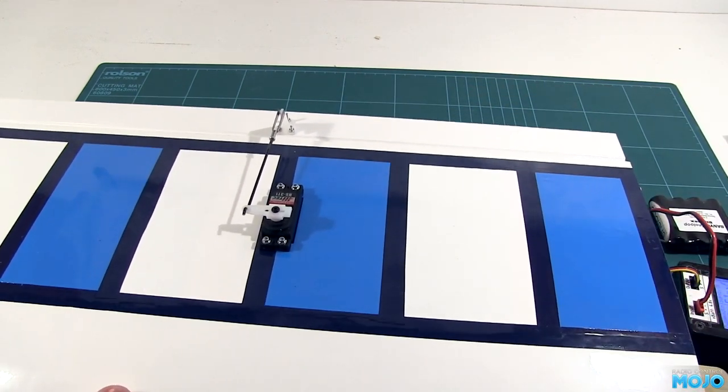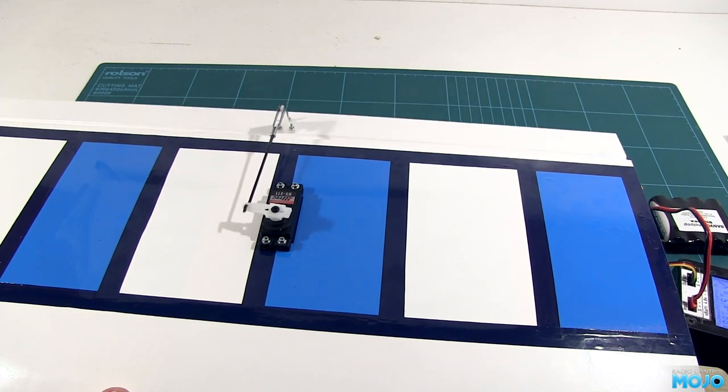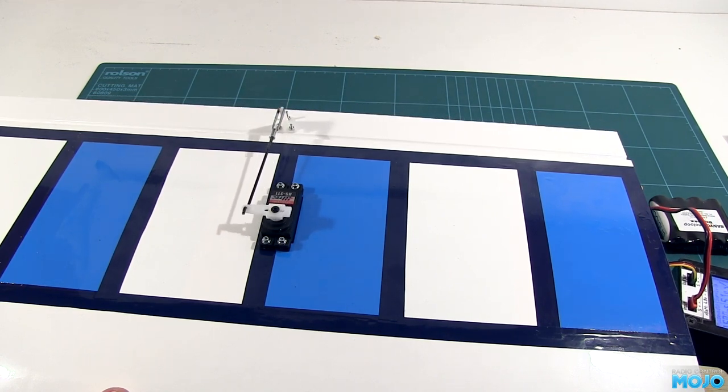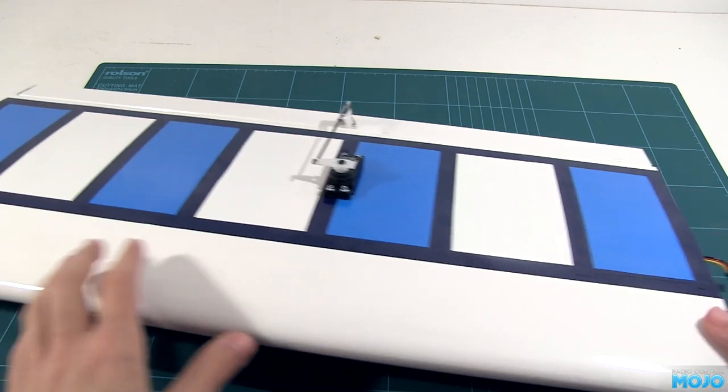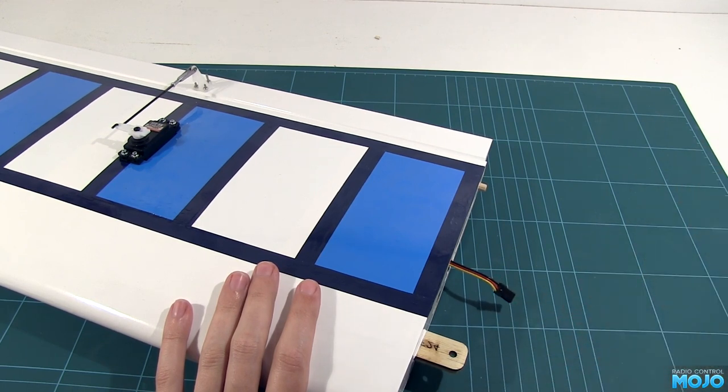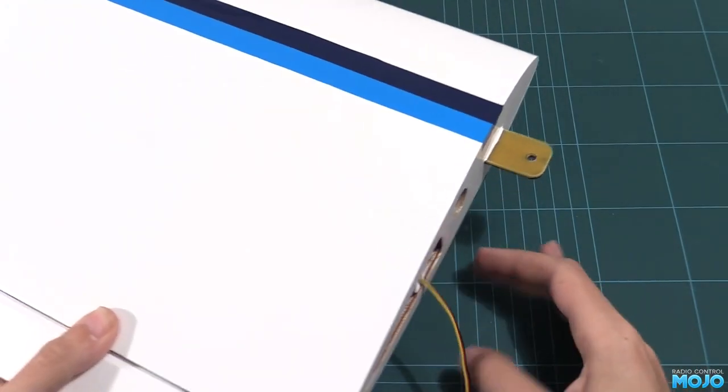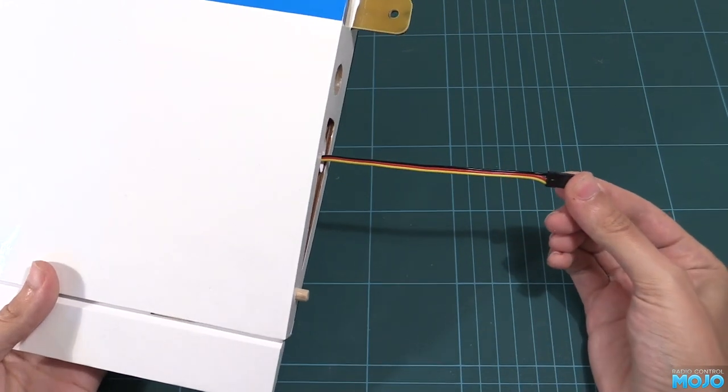The hinges aren't glued yet, but we can have a quick test. Nice! One more thing with the wing servos. The leads are a little short to be practical. I'm going to extend them and there's a few ways to tackle it. There's already an RC Mojo video on the subject, so I'll stick a link to that in the description if you want to learn all the ins and outs. Here's the result, much better. Should reach the receiver now, which is a good thing.